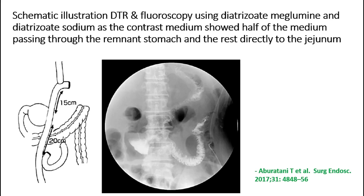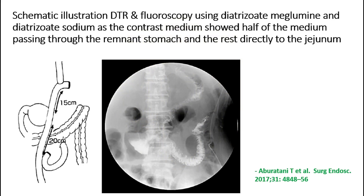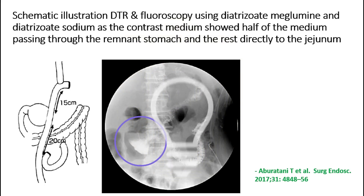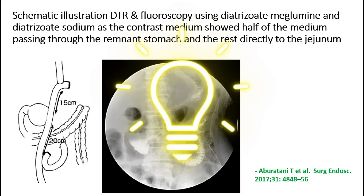In the same study by Ahn et al., published in 2017, a schematic illustration of double tract reconstruction and fluoroscopy using diatrizoate meglumine and diatrizoate sodium as contrast medium showed the medium passing through the remnant stomach directly to the jejunum. When the patient swallowed the contrast media, it went into the remnant stomach — visible on the X-ray — and also into the jejunum. So the distal stomach was available for food and it was also passing into the jejunum, allowing the patient to have a full meal. This demonstrated the advantage of double tract reconstruction, along with easier endoscopic access to the ampulla.